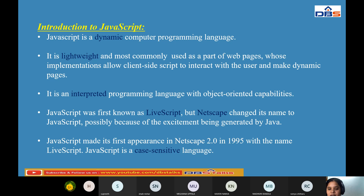JavaScript is an interpreted programming language with object-oriented capabilities. Object-oriented capabilities means it is based on OOP concepts — object, class, abstraction, encapsulation, and polymorphism. JavaScript is interpreted because we use interpreters to execute the programs, executing line by line.